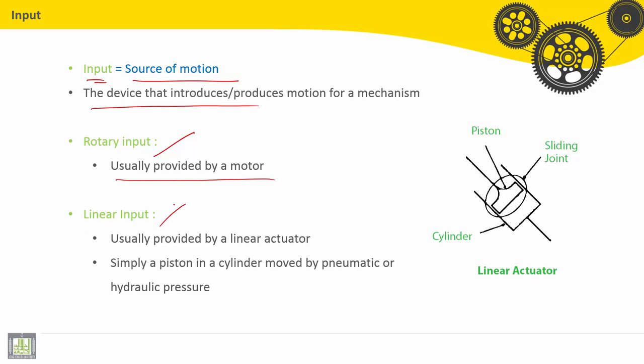Or linear input, usually provided by a linear actuator, as shown here in the figure. So it is simply a piston in a cylinder moved by pneumatic or hydraulic pressure. Here we have the piston. This is the piston. Here the cylinder. So here it can be a pneumatic or hydraulic pressure cylinder to provide linear motion.